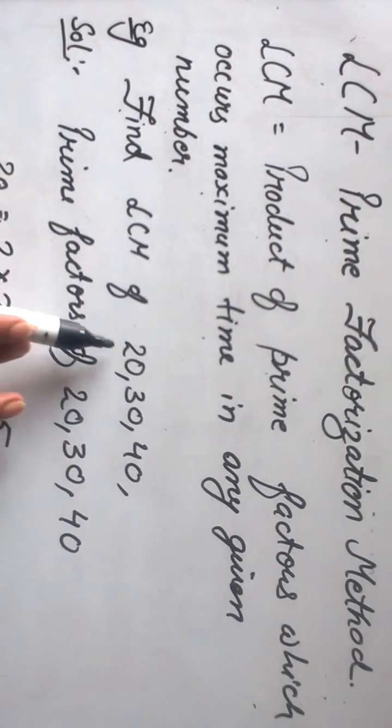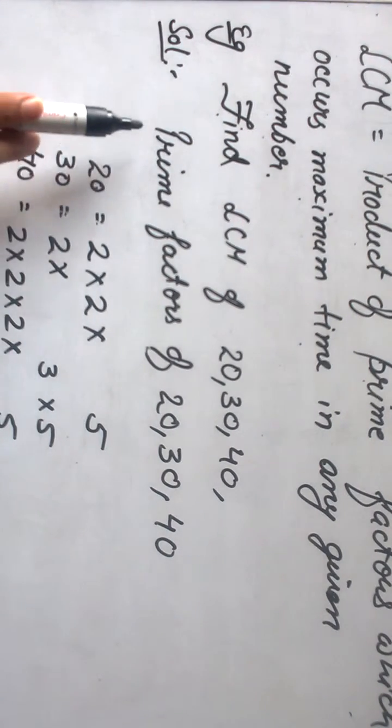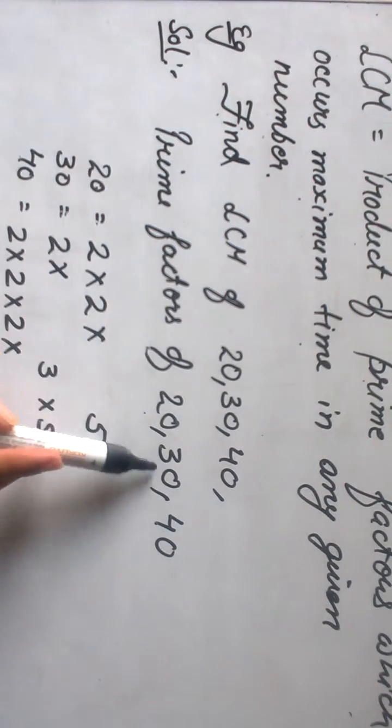Find LCM of 20, 30 and 40. To solve this, first we have to find out prime factors for 20, 30 and 40.